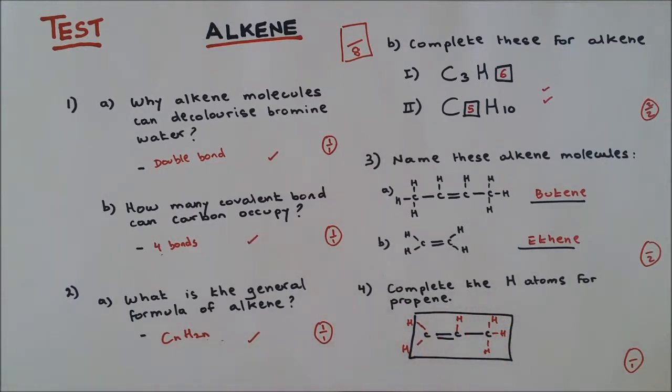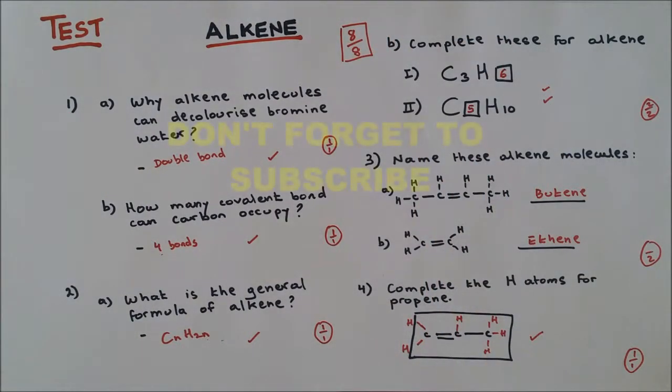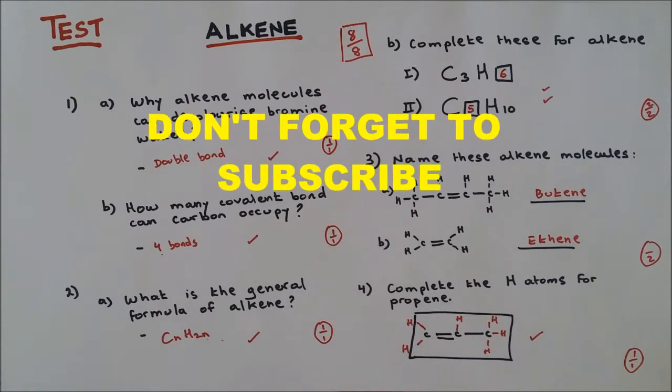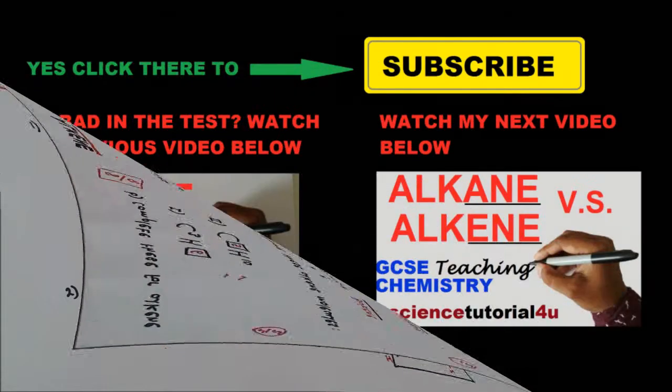One out of one. Everything adds up to eight marks. You got eight out of eight, well done! If you did bad in the test, you can go and check my video on alkene. Thank you, and I'll see you in my next video where I'll be comparing alkane and alkene.